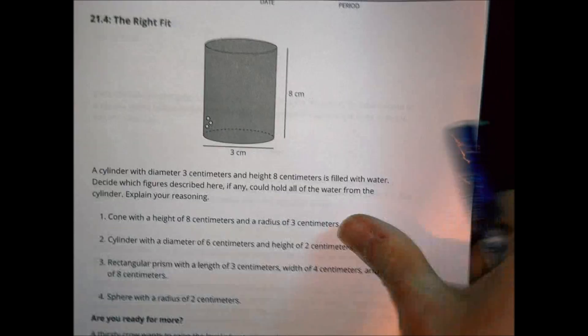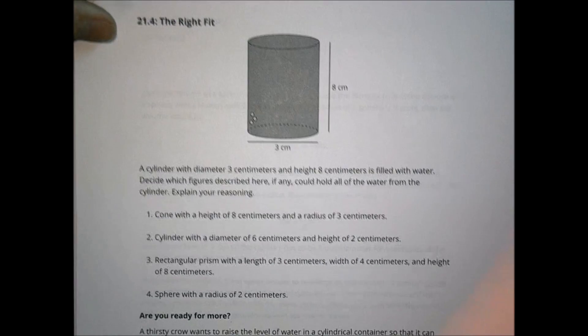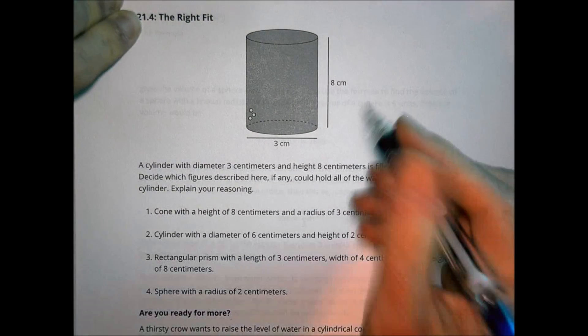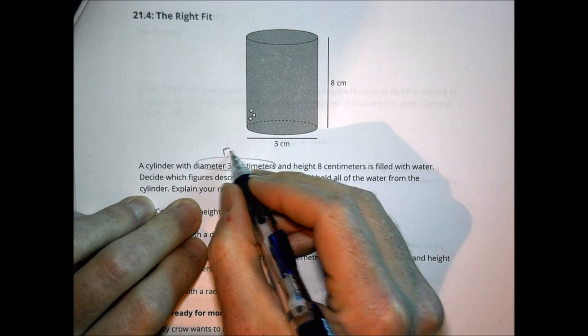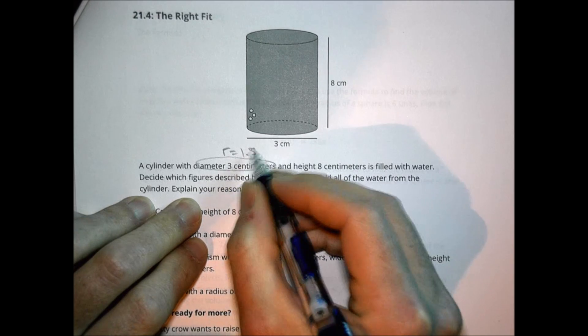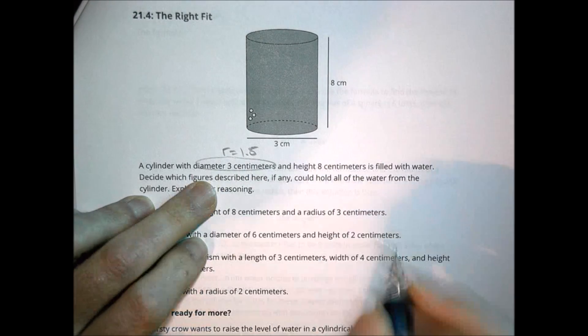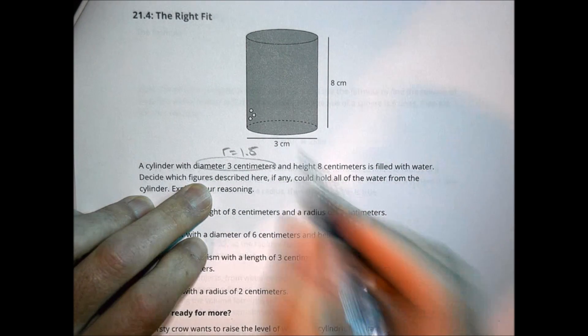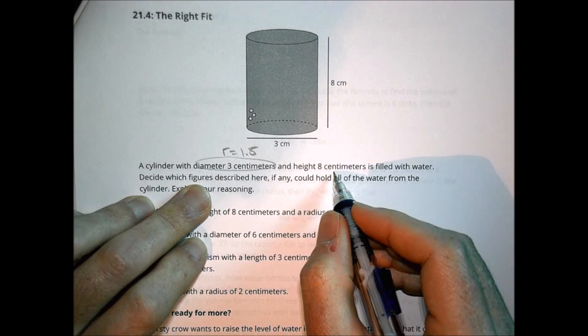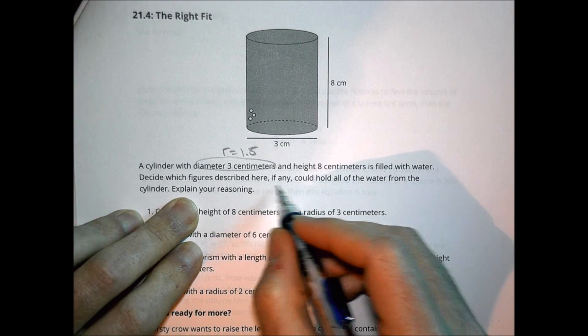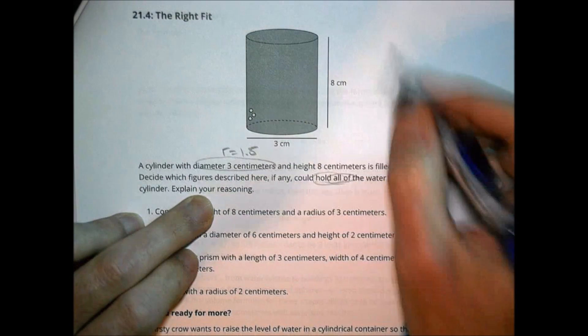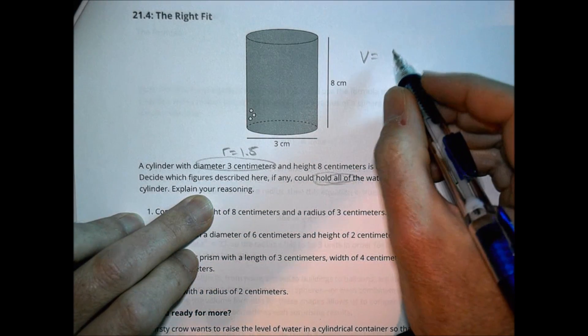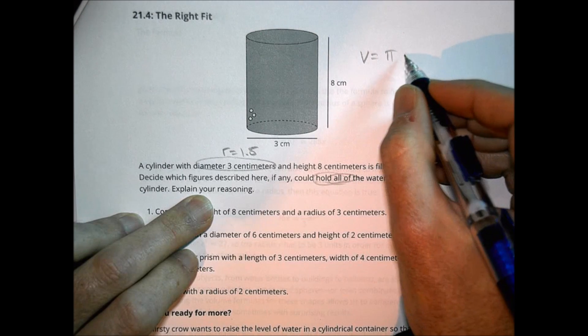Our next activity is activity four called the right fit. And this activity, what we're given is we're given a cylinder here that has a diameter of three centimeters. Remember, that's a diameter of three centimeters, which makes the radius equal to 1.5. And I just jot these notes down right away as I see it, so I don't forget about it later. The height is eight, fill the water, decide what figures described here. If any could hold all of the water. That's what we're looking for.